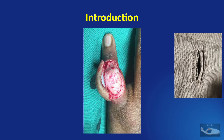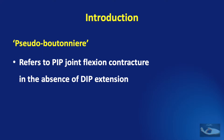As seen in this surgical picture, the shape of the defect over the proximal interphalangeal joint resembles the buttonhole. If there is only a PIP joint flexion contracture and no DIP joint hyperextension, it is referred to as a pseudo-Boutonniere.